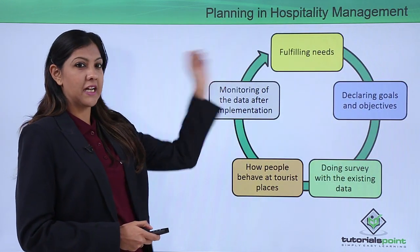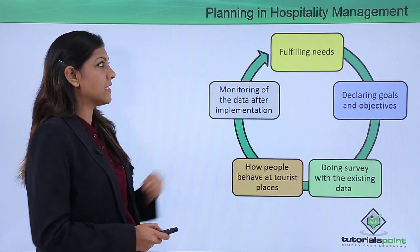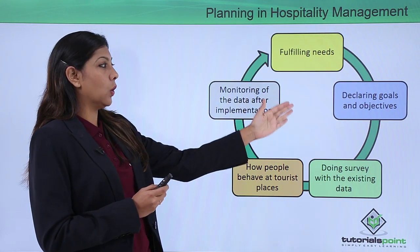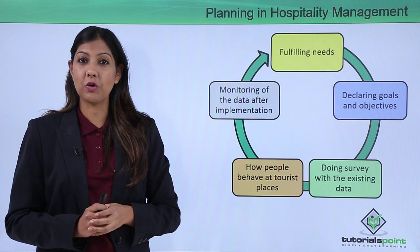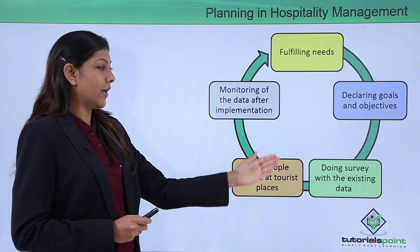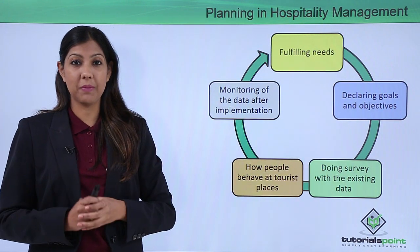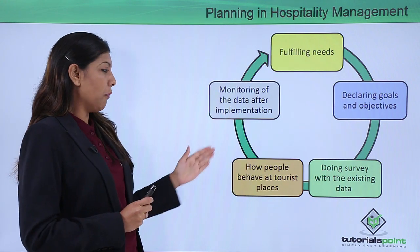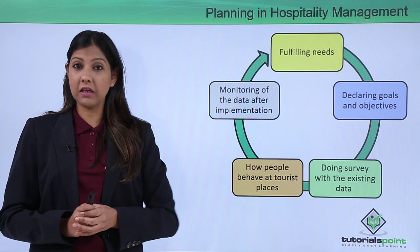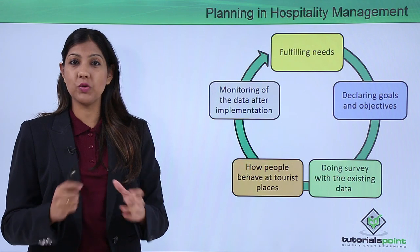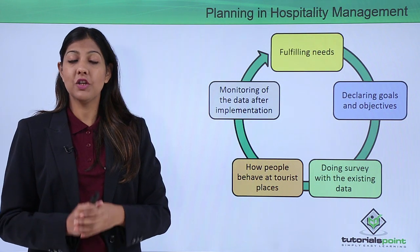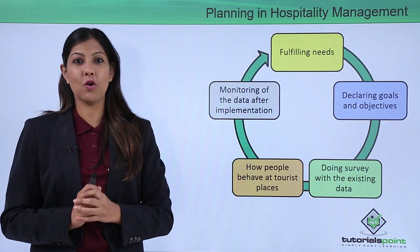Planning in hospitality management works in a different cycle. You need to first fulfill existing needs, declare goals and objectives, and have a plan of action for the hotel industry. You should conduct surveys using existing data, research how people behave at tourist destinations when they travel, and monitor data after implementation. That's how you plan your career as a manager in the hospitality industry.